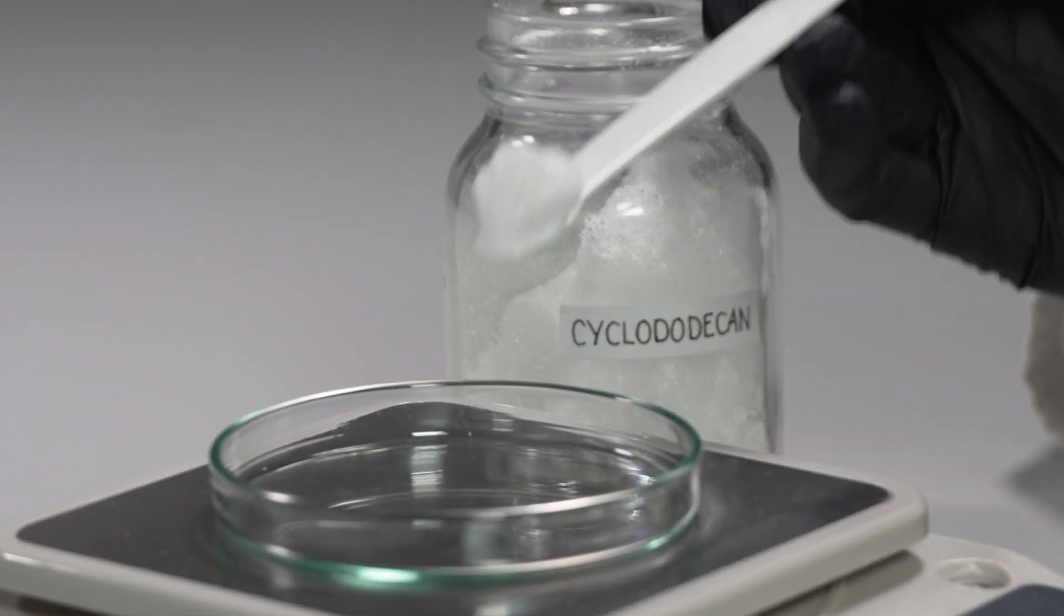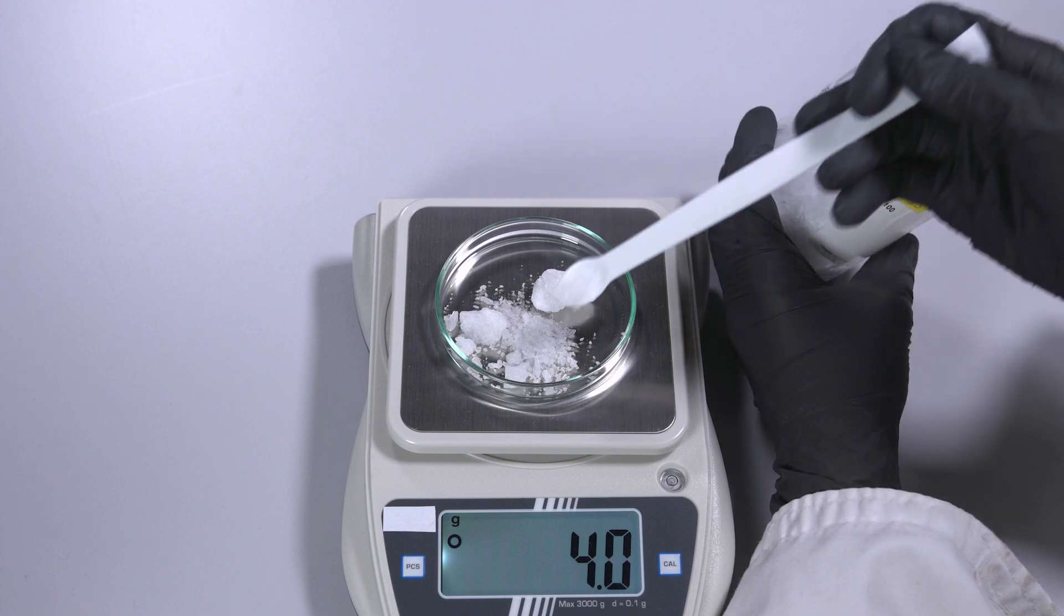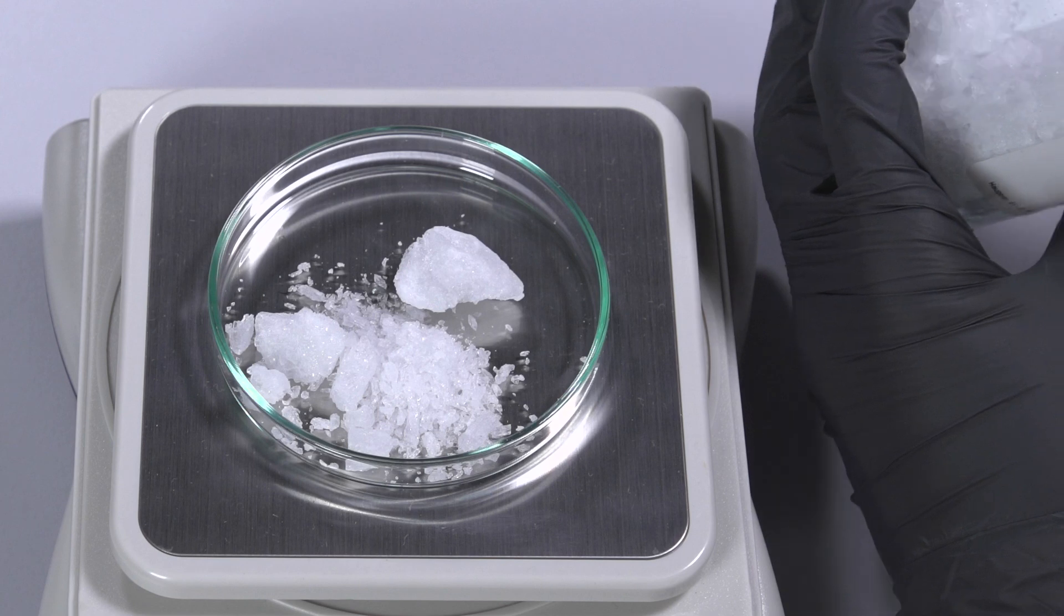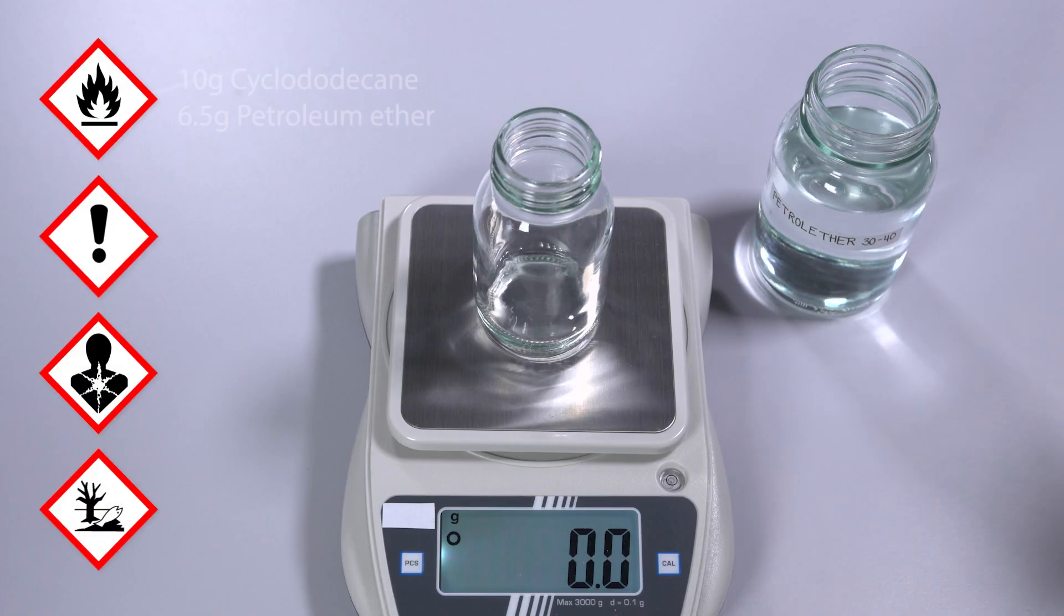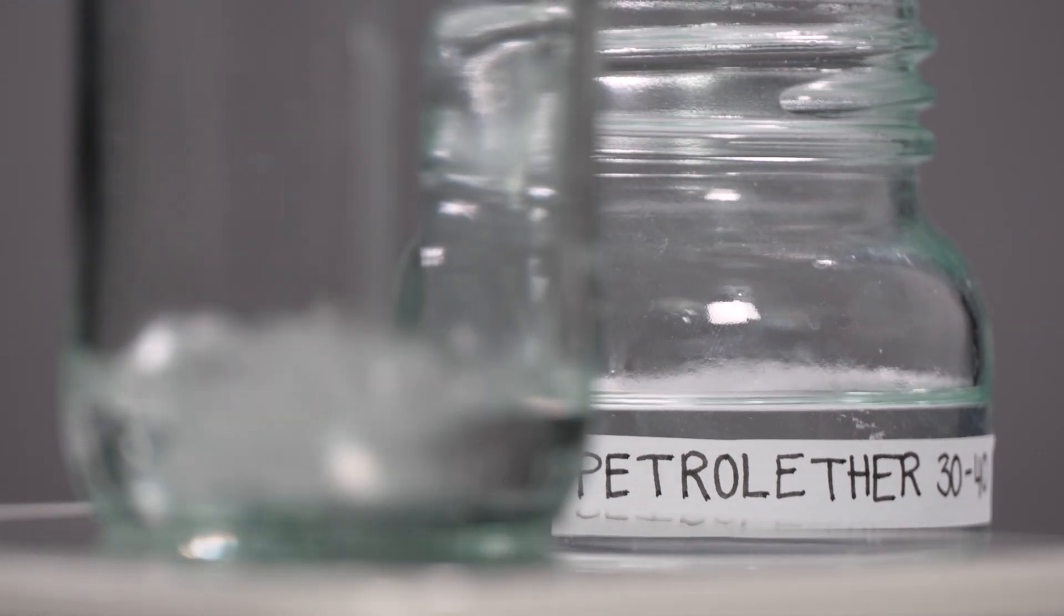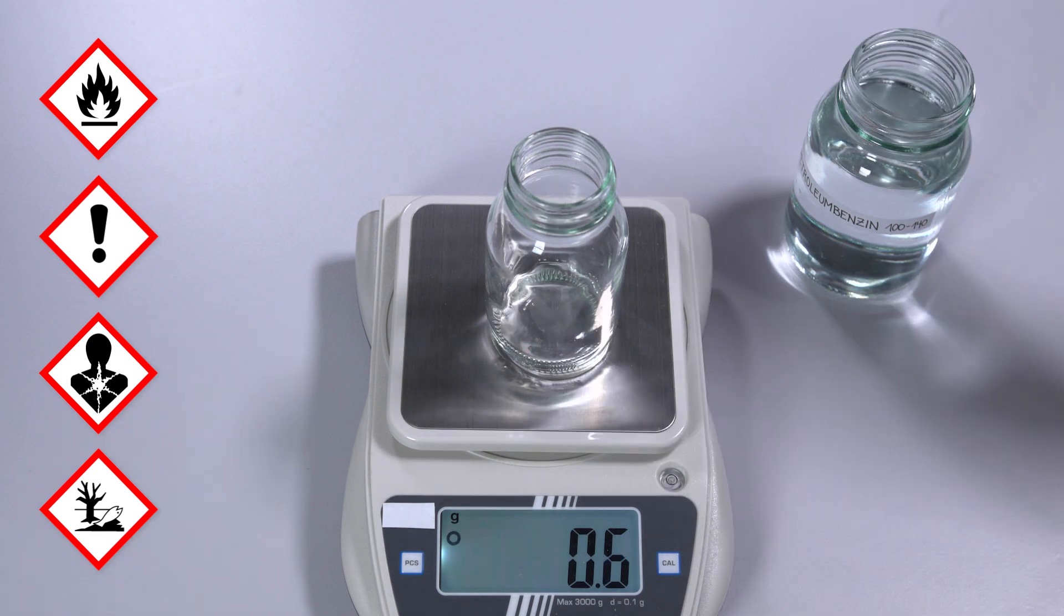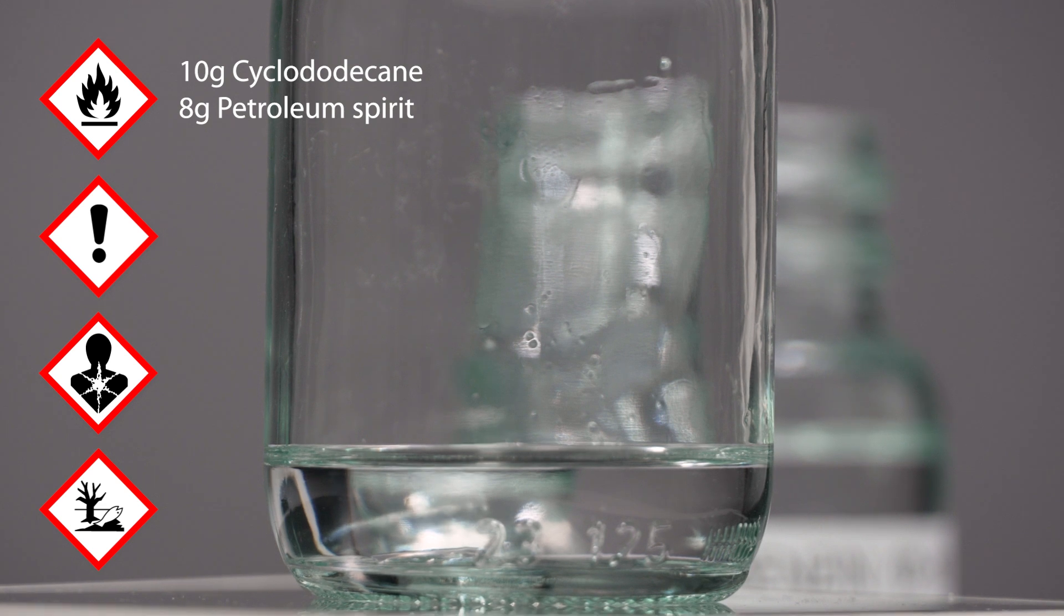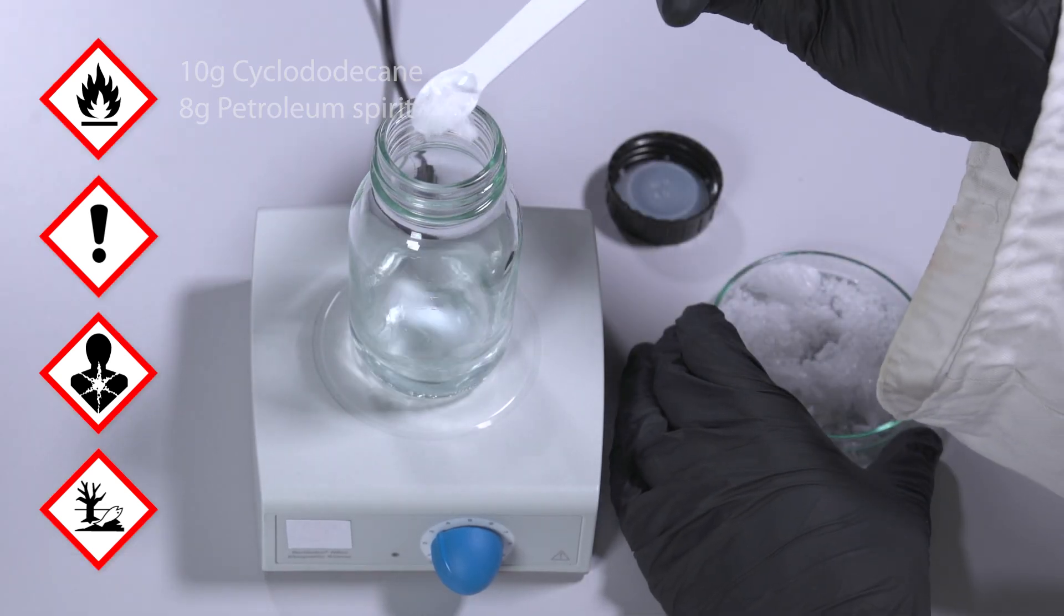First, the cyclododecane and the solvent are weighed. Petroleum ether 30 to 40 evaporates quickly and is used when the solution should not penetrate deeply. 10 grams of cyclododecane are dissolved in 6.5 grams of petroleum ether. Petroleum spirit 100 to 140 is suitable if stronger penetration is desired. 10 grams of cyclododecane are dissolved in 8 grams of petroleum spirit.